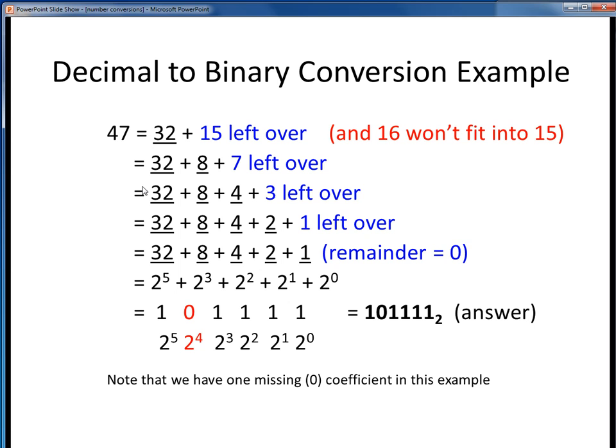So what we've done is we've broken down this original decimal number of 47 into a sum of terms which are all factors of 2, as shown here.